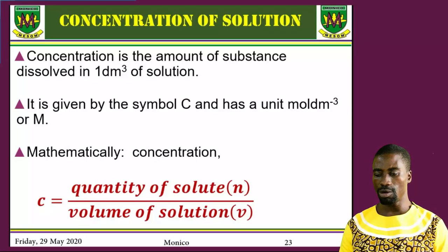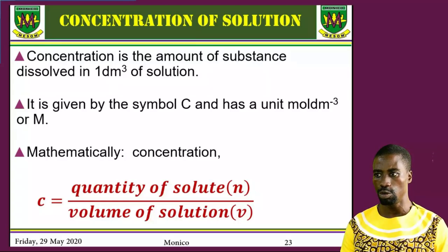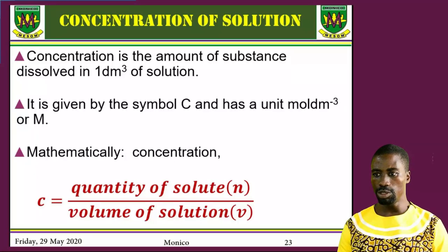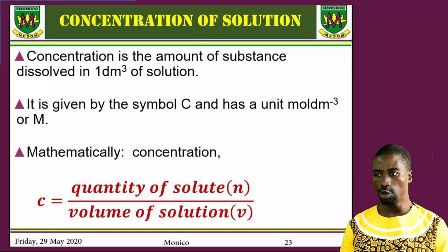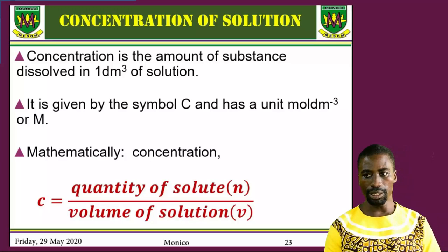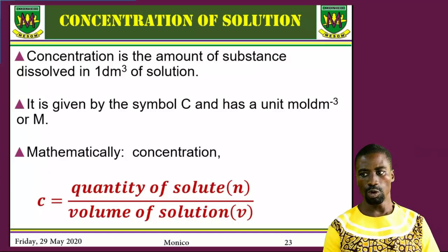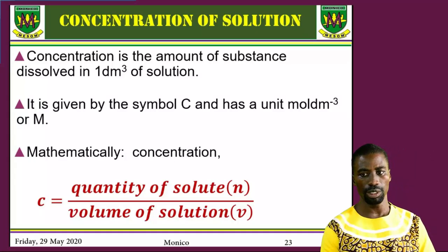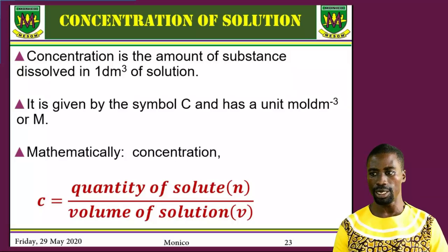Mathematically, concentration is given as quantity of solute per unit volume of solution. So if we look at the soup example, the salt will be the solute, and the whole soup will be the solution — ignoring the fish and other things, I am only looking at the salt in there.